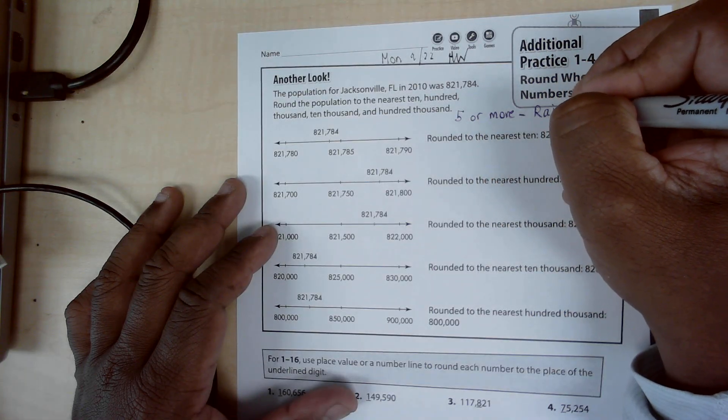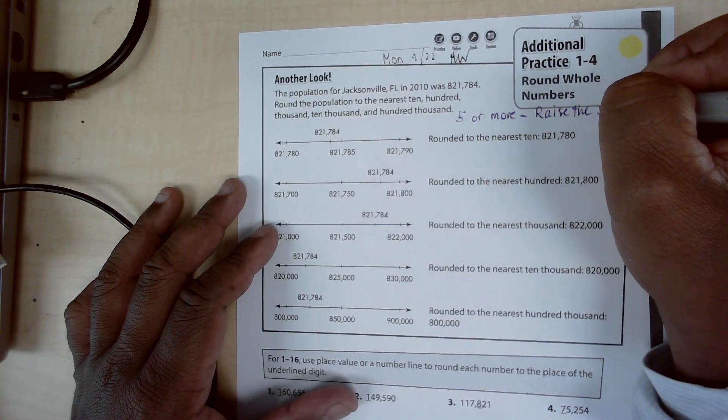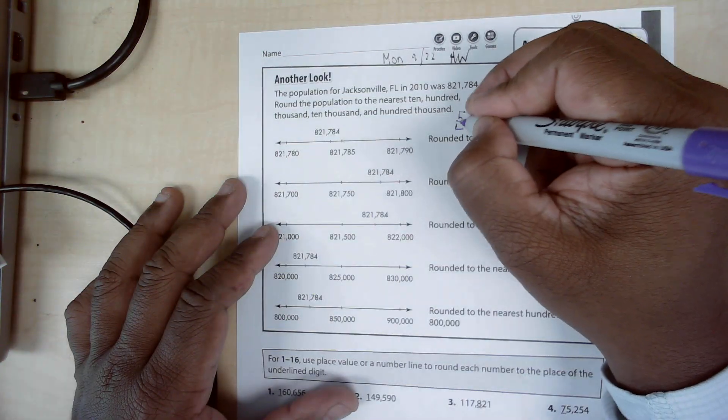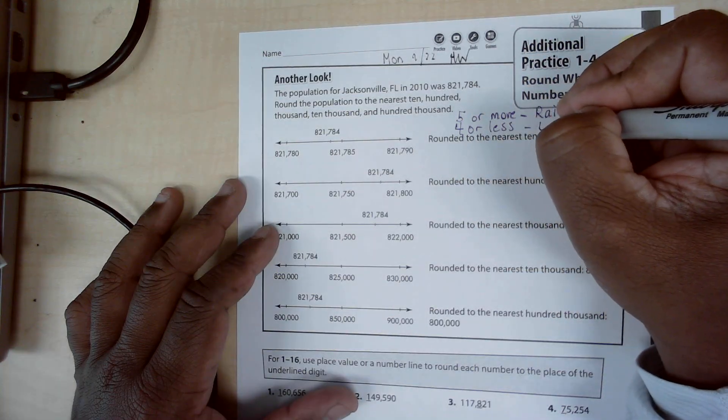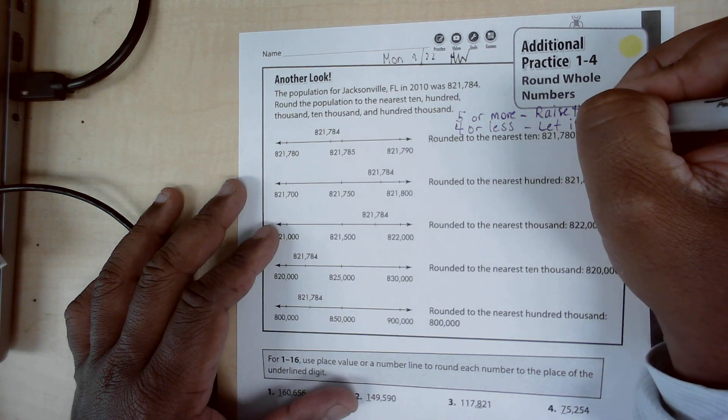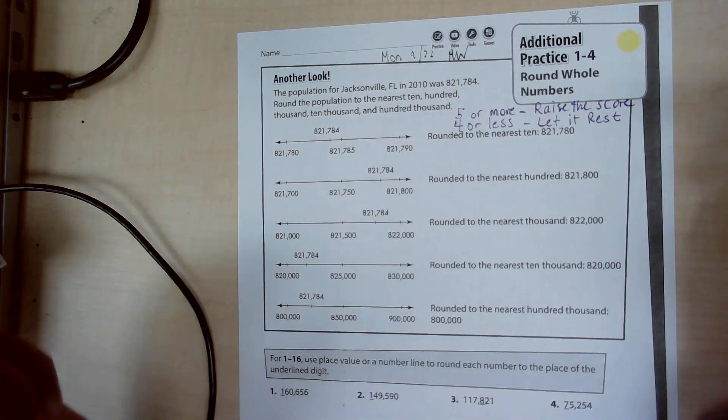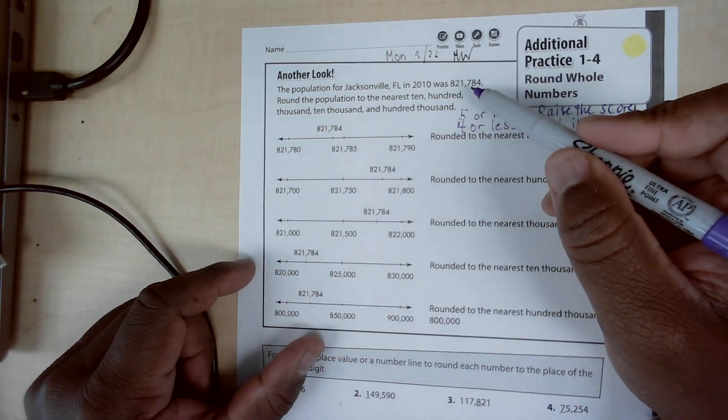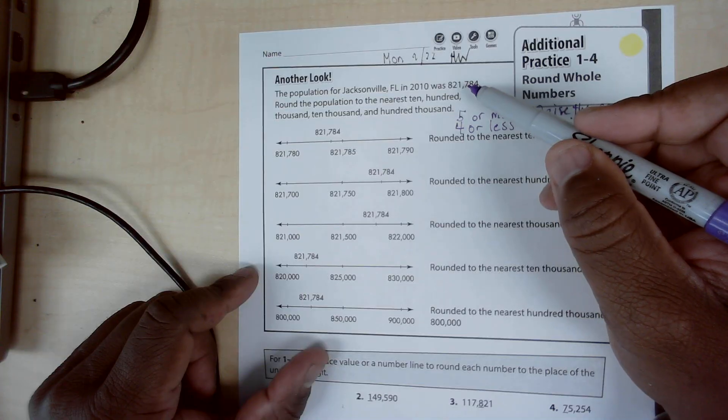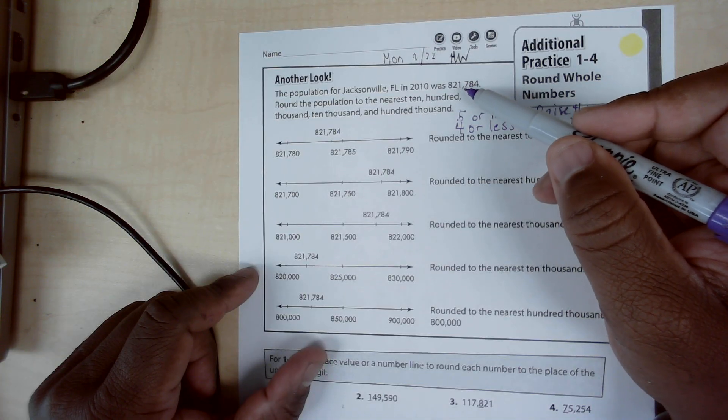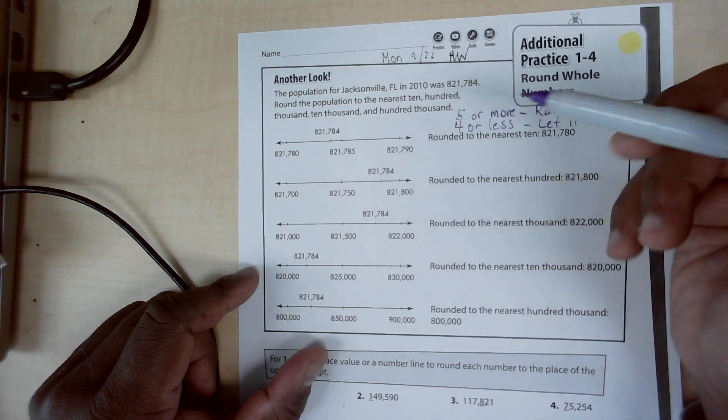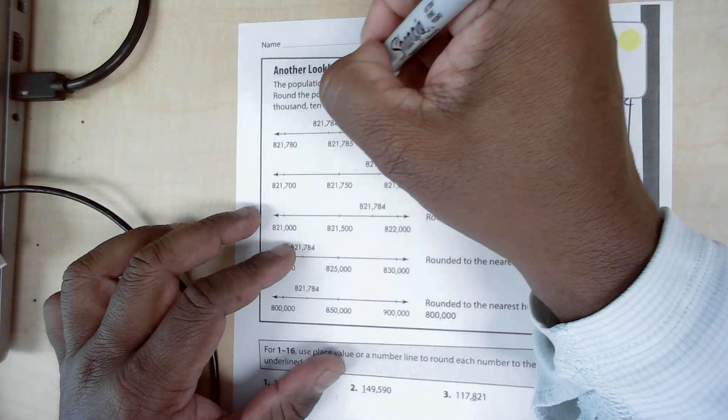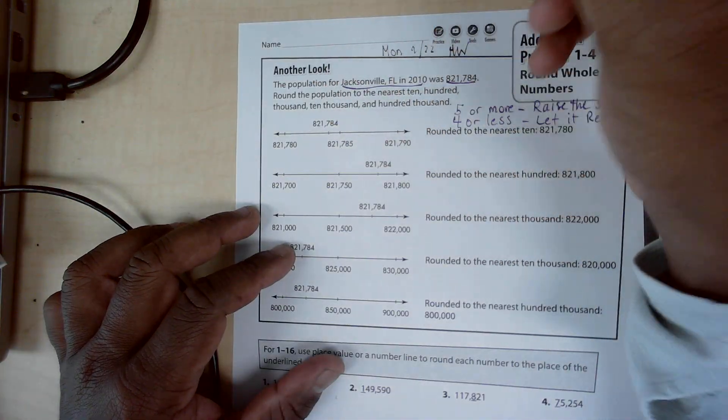Raise the score. Four or less, let it rest. So what does that mean? Let's look at the number 821,784—that's the population of Jacksonville, Florida in 2010. Okay, and we're going to round this number...